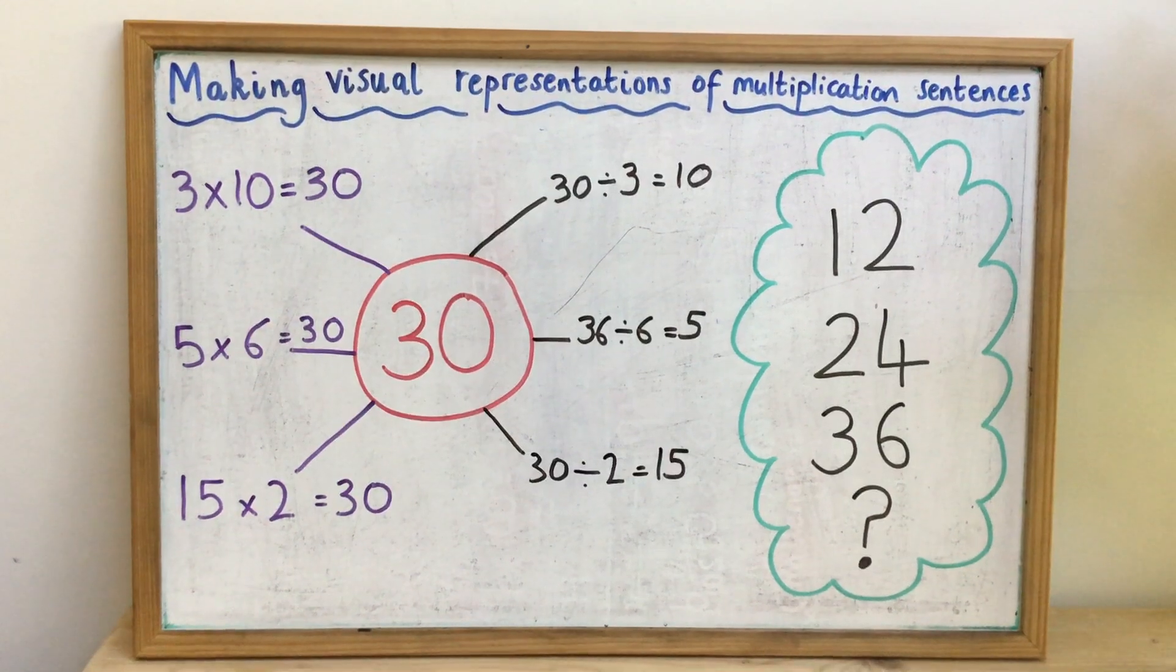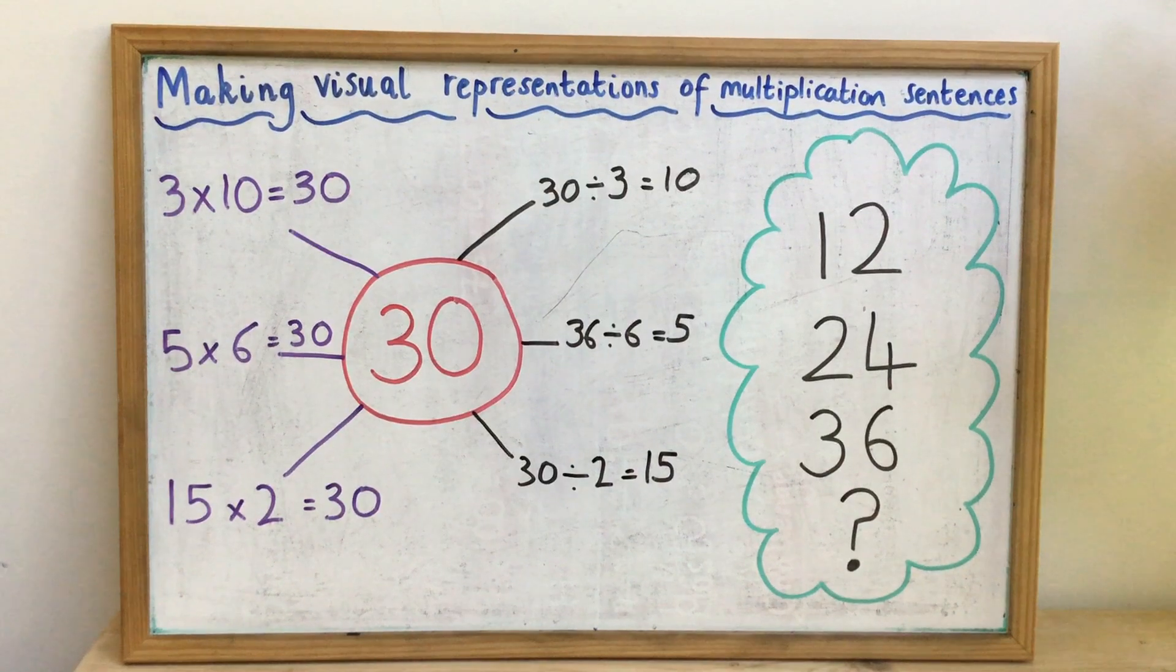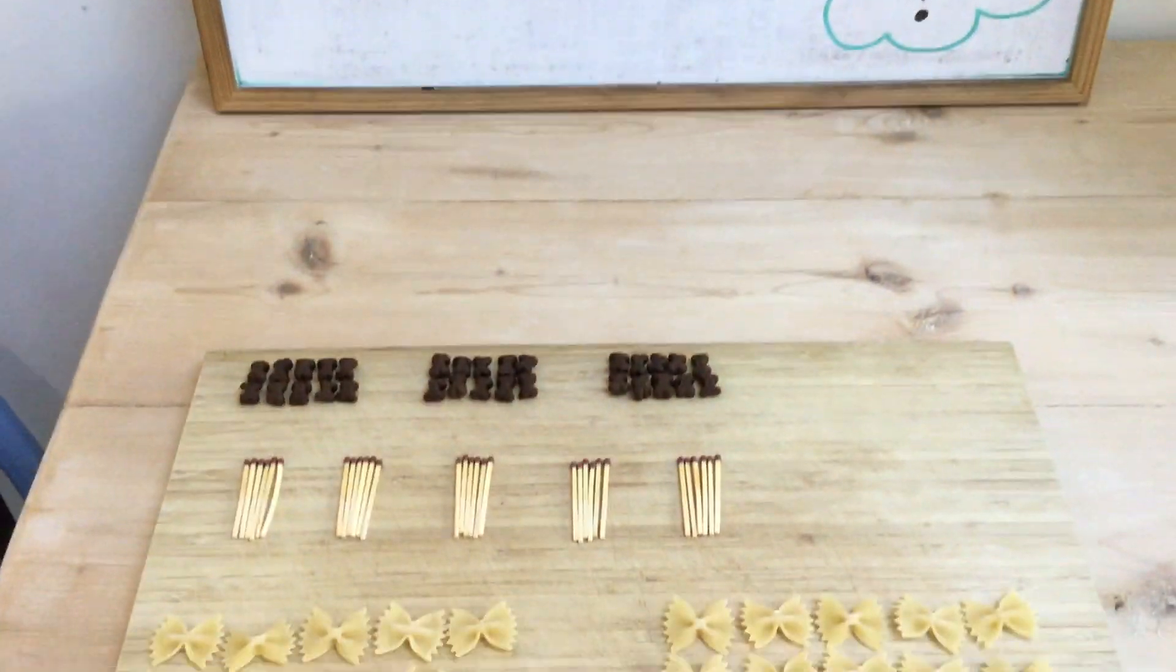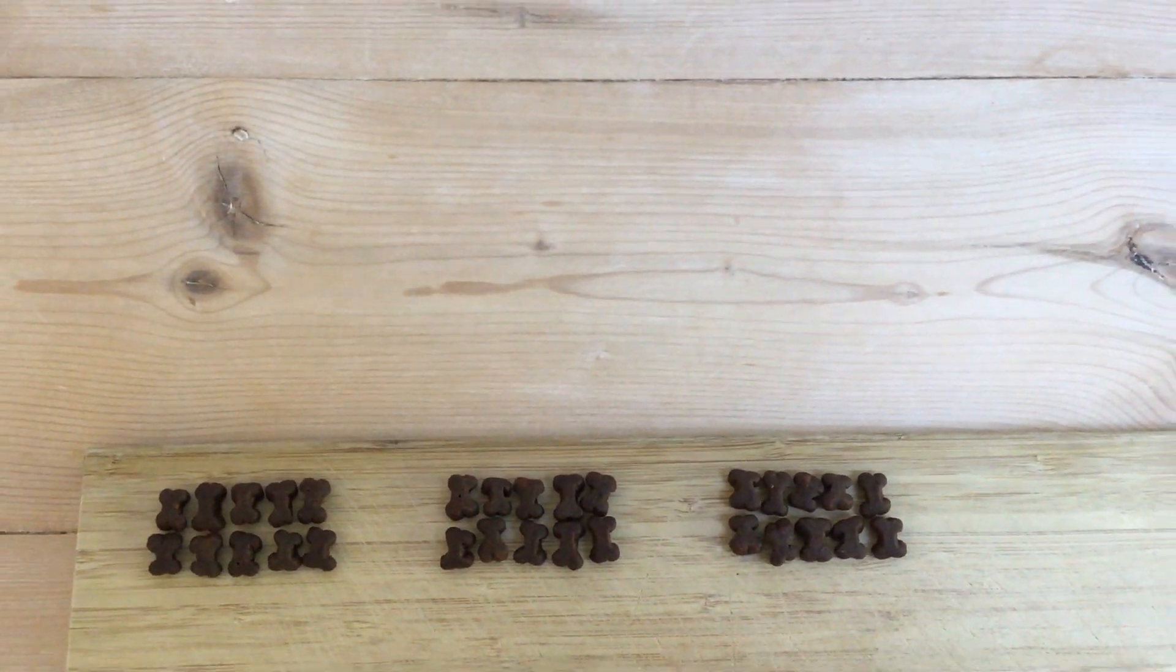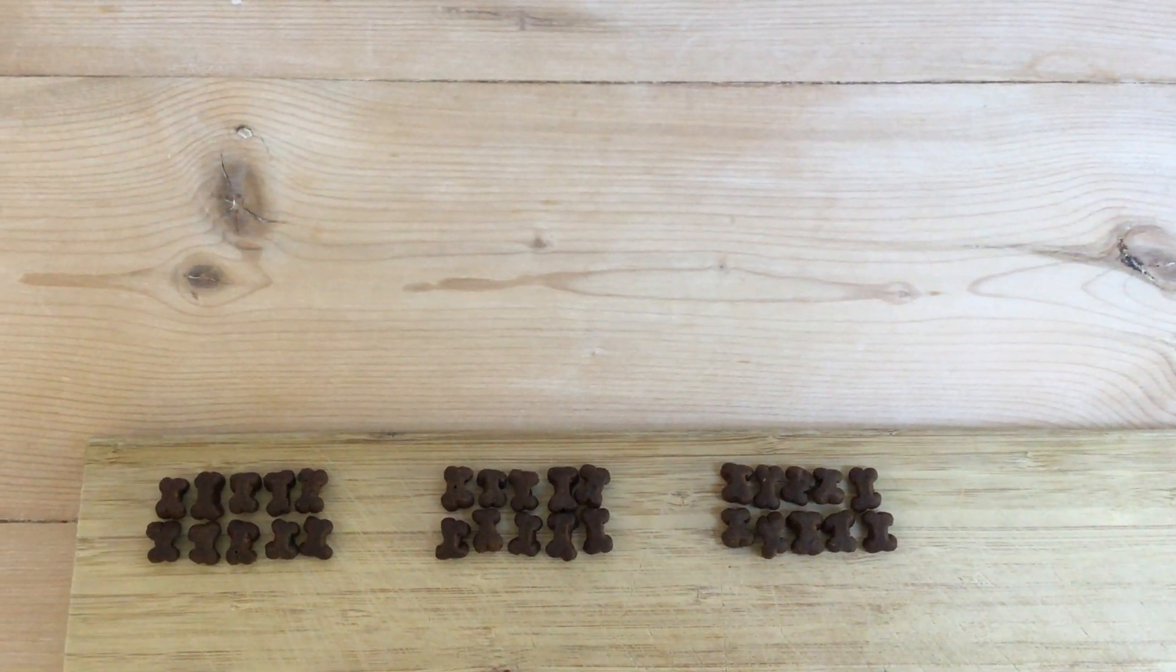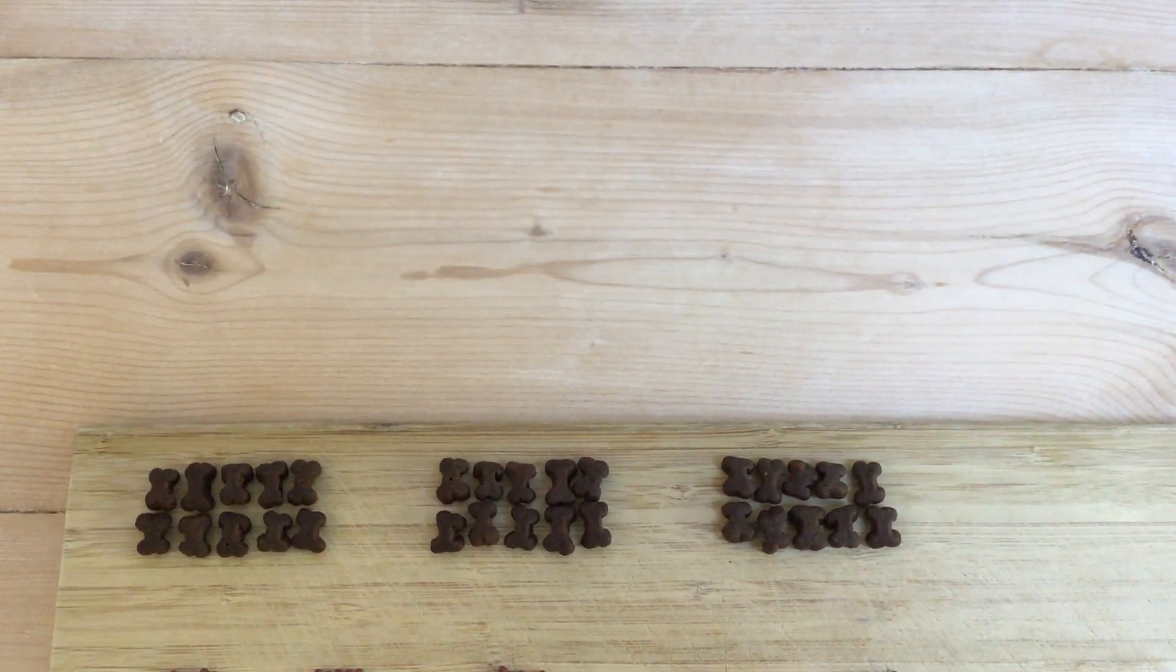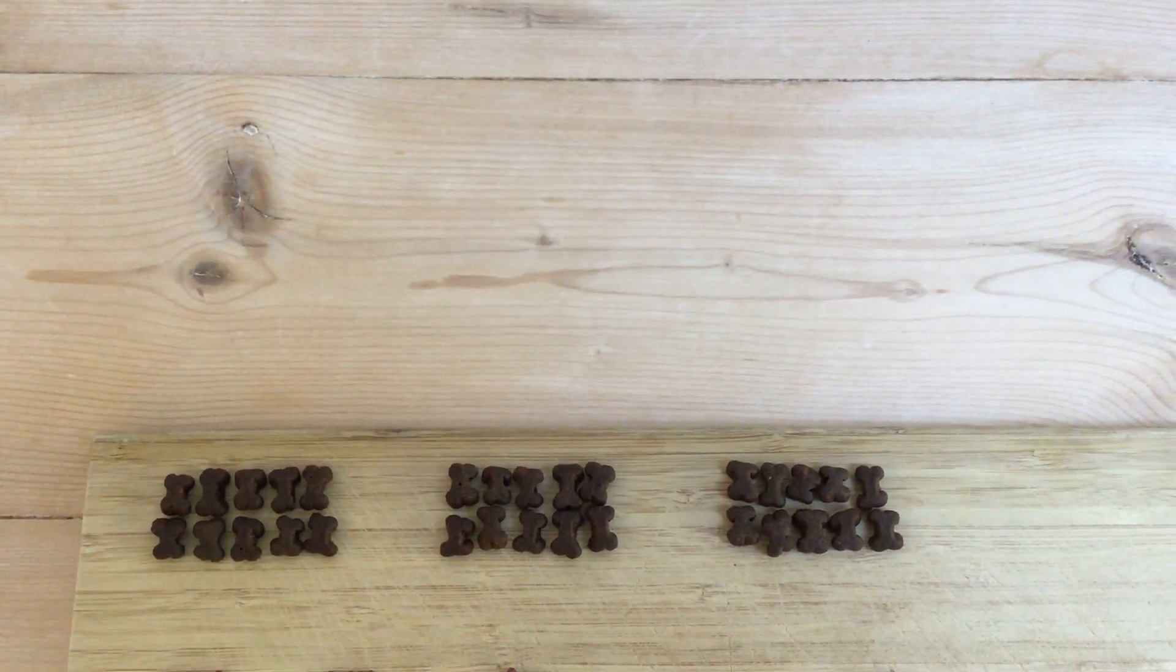So the first one, 3 times 10 is 30. I've decided that I wanted to show this multiplication sentence using little dog treats that Jem's got. So I'm going to show you how I've done that. Can you see there the little dark brown bones? Those are Jem's dog treats. And this is my visual representation of 3 times 10 is 30. So you will see there are 3 groups of treats. And in each group there are 10 treats.